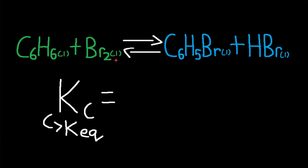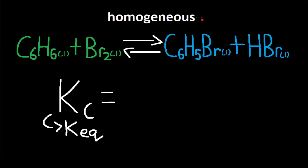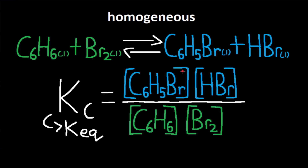What would the equilibrium expression be for this reaction? We don't include liquids or solids, but here we have a homogeneous reaction where everything is all one phase — in this case, all liquids. If the reaction is homogeneous for liquids and solids, Kc will include those liquids and solids. So for this reaction all liquids will be included, and if this reaction was all solids, all solids would be included in the equilibrium expression.